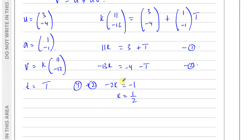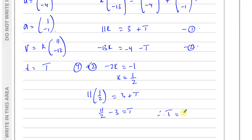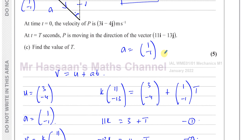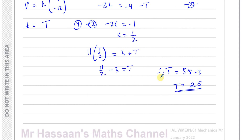Substituting k = 1/2 into equation 1: 11 × (1/2) = 3 + t, so 5.5 − 3 = t, therefore t = 2.5. So t = 2.5 seconds.